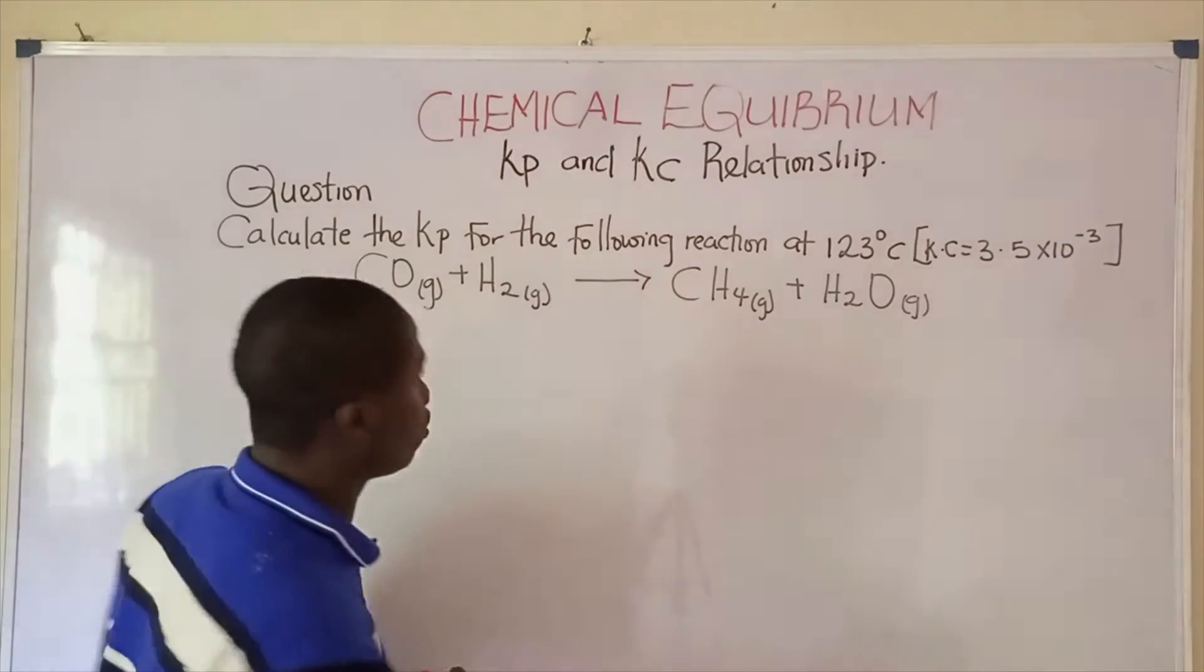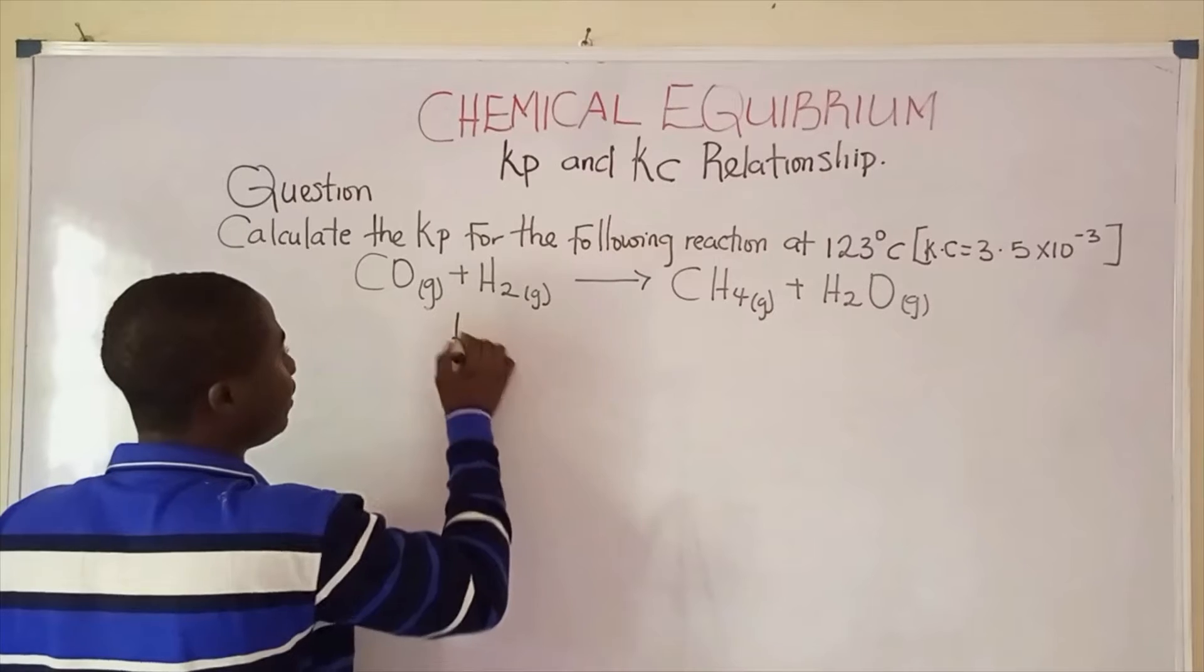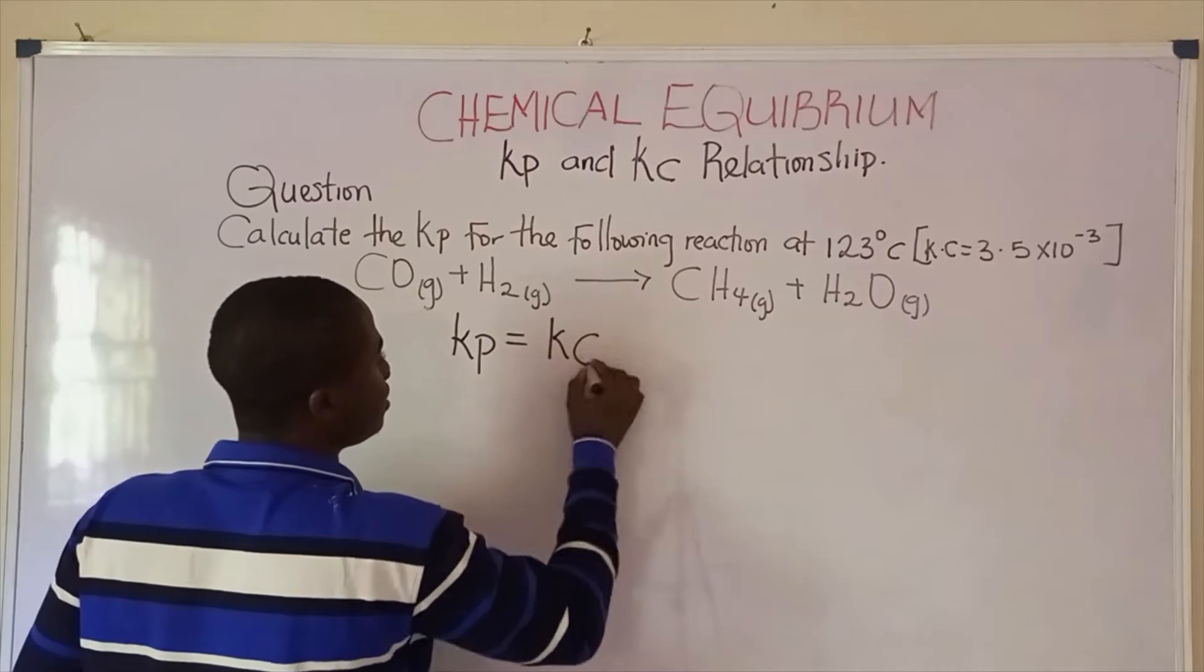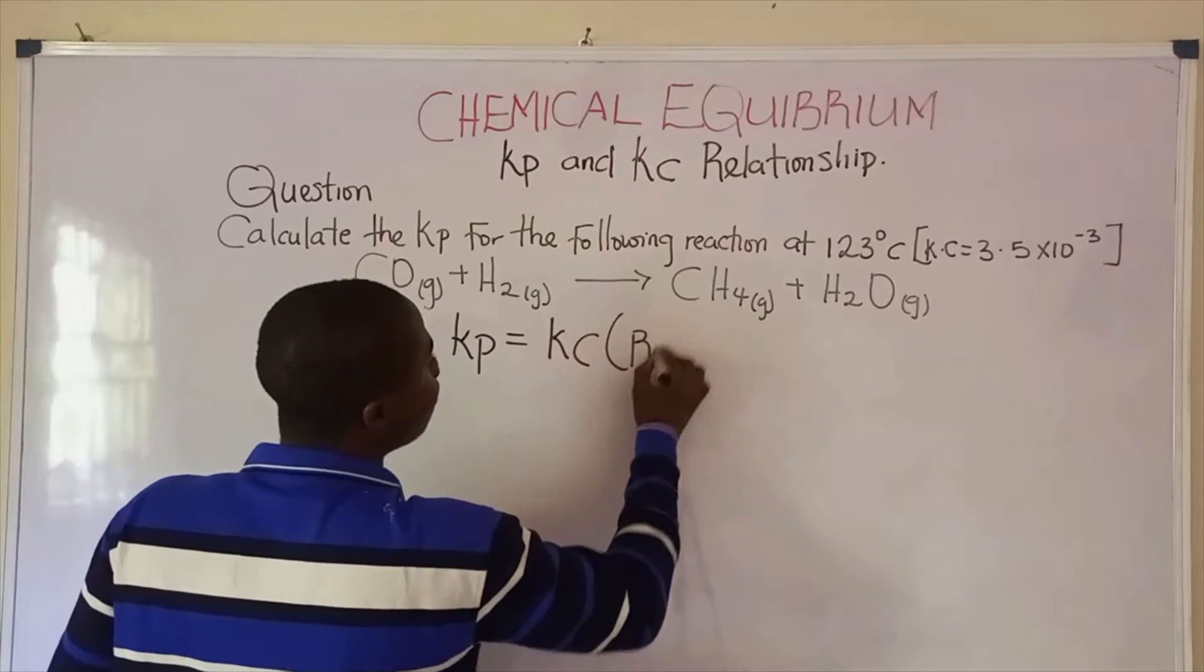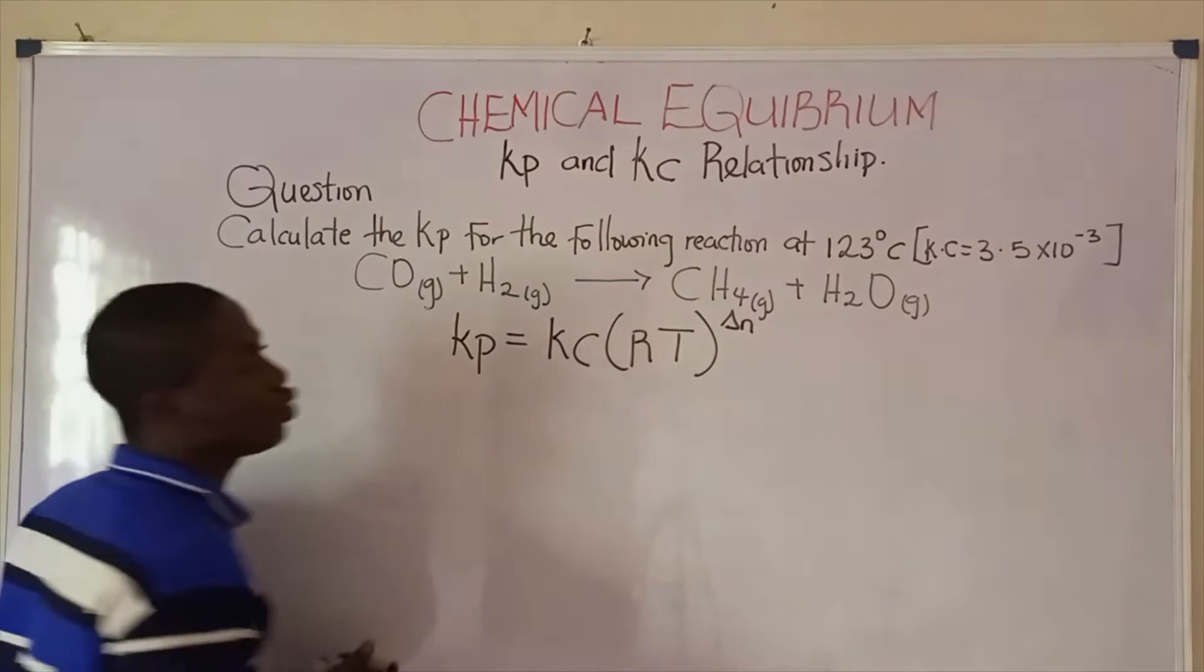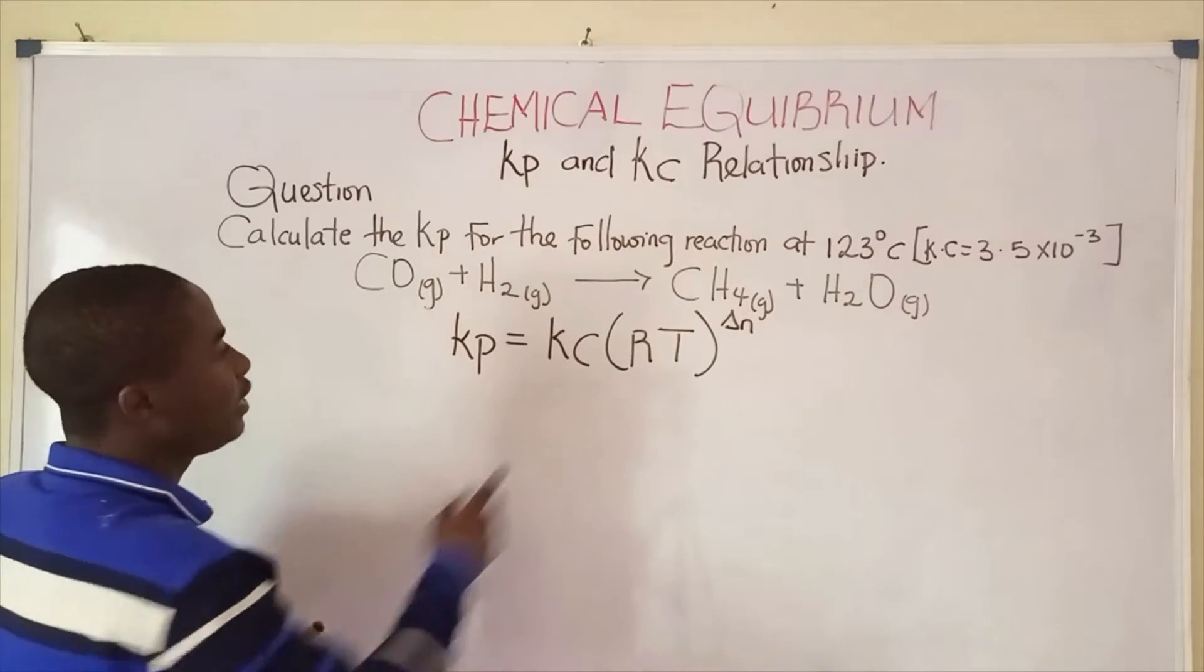There's a formula that relates both constants. It's simply Kp equals Kc times RT raised to power change in number of moles of the reactant species.